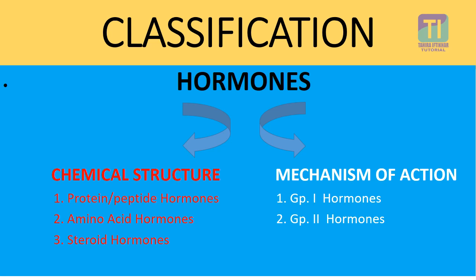Number one is protein or peptide hormones — for example, insulin, glucagon, and antidiuretic hormone. Next is amino acid hormones — for example, epinephrine, norepinephrine, and thyroxine. The third class according to chemical structure is steroid hormones — for example, corticosteroids and sex hormones.